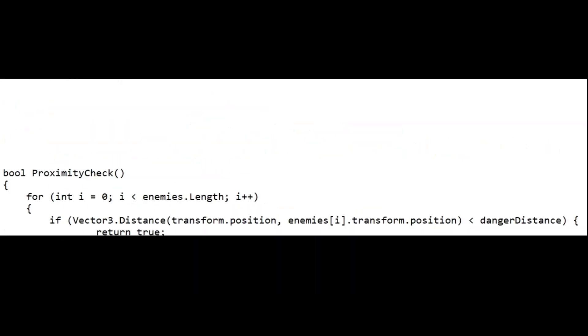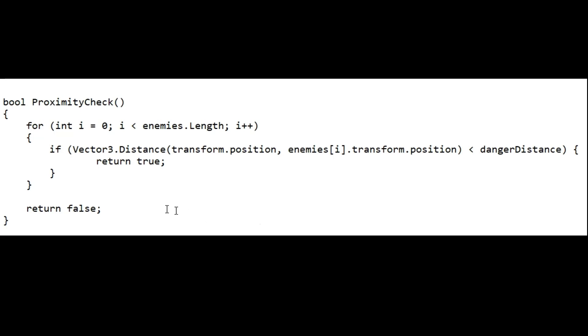For example, you might have an alarm in your application that warns the player if an enemy is nearby with the following code. If there are a lot of enemies, then calling this function every frame might introduce a significant overhead.